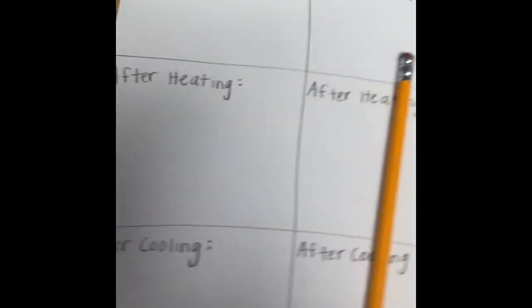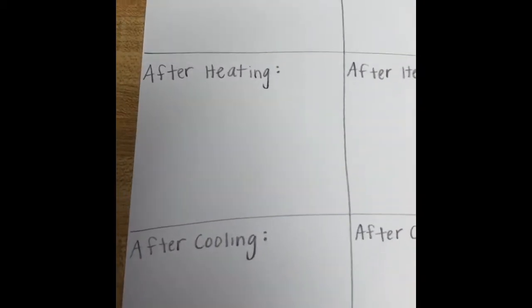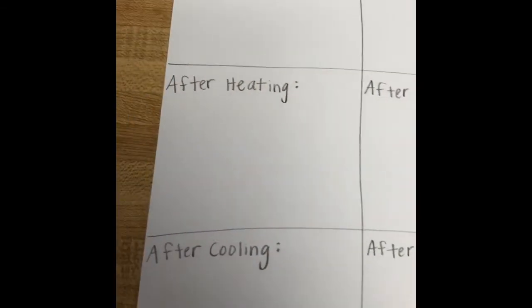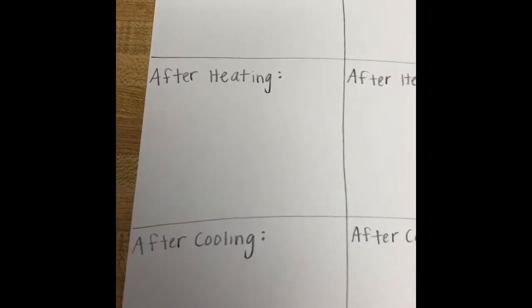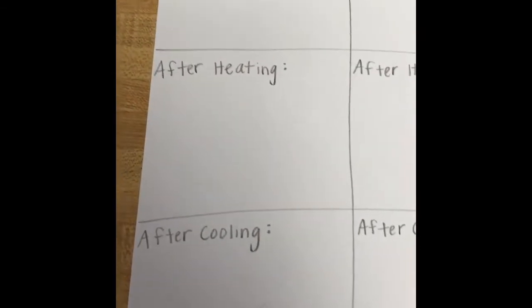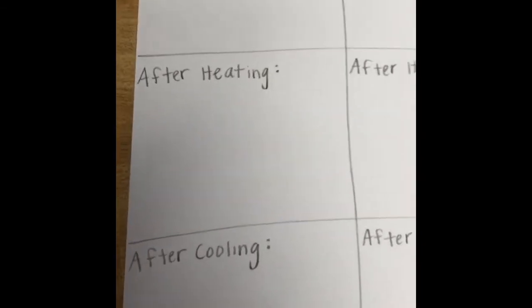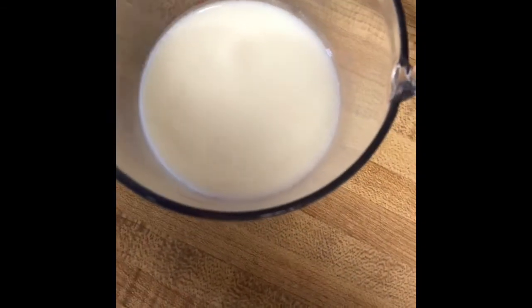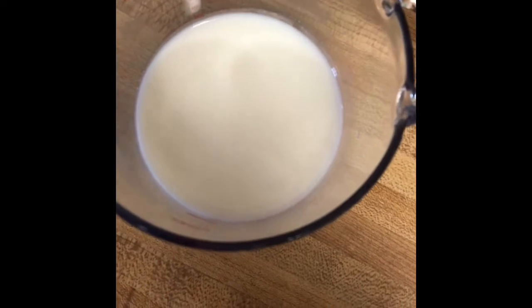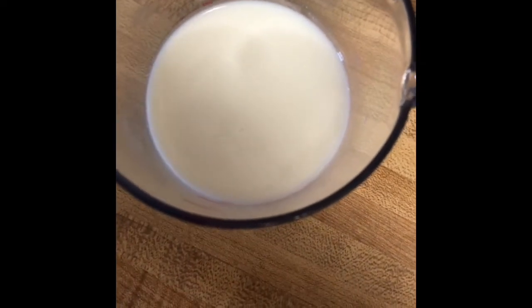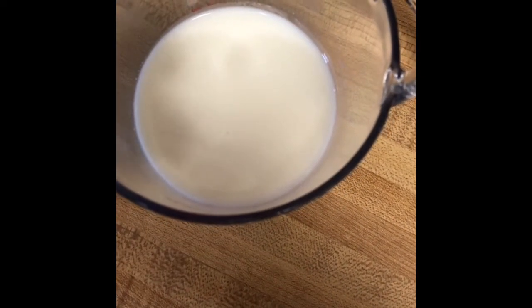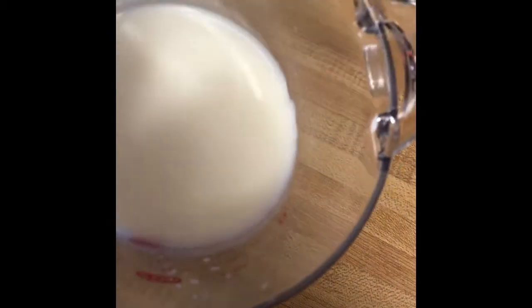Today for this lesson, we're just going to be focusing on milk. We are going to make some observations about what the milk looks like before we heat it up. In this cup right here I have a cup of milk. In your science journal, I want you to write some things down that you notice about this cup of milk before we heat it.